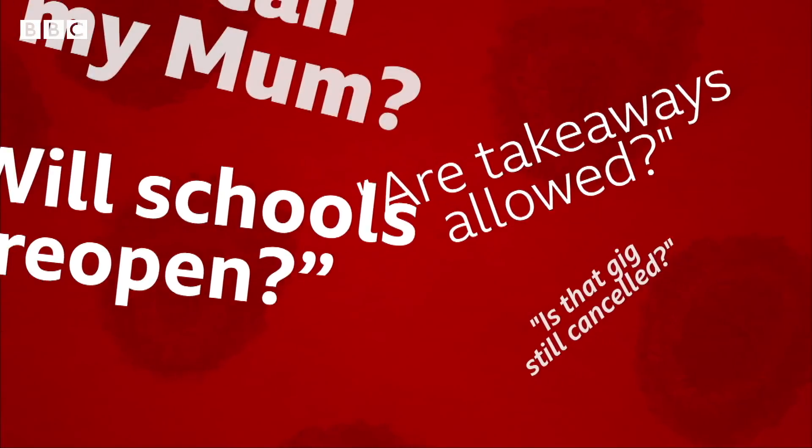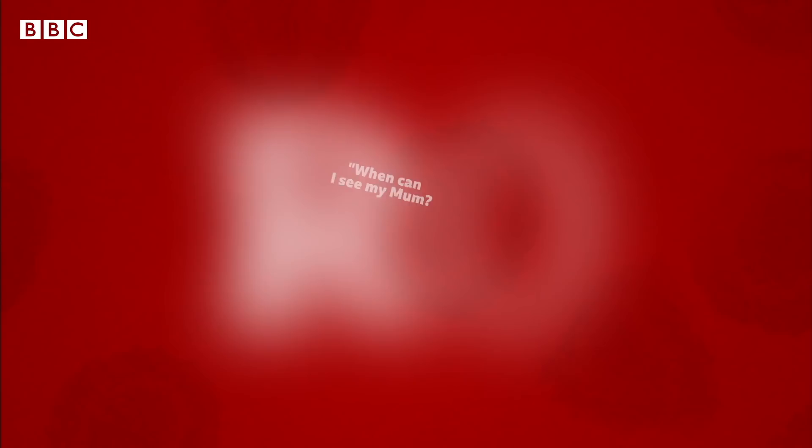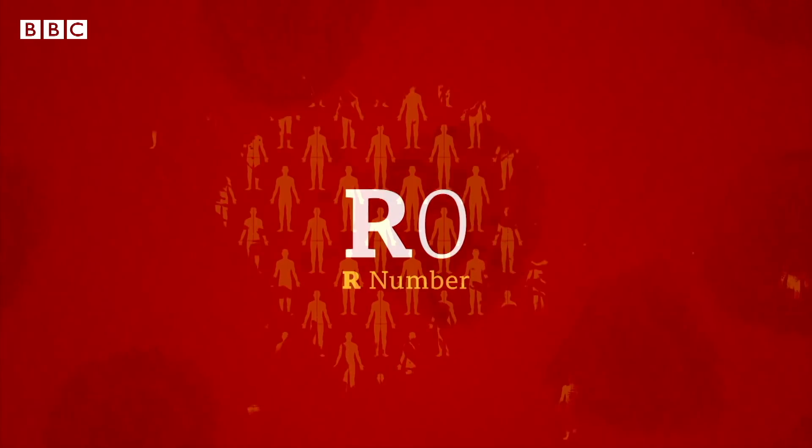When will schools open? Are takeaways allowed? When can I go and see my mum? Our lives right now are pretty much controlled by something called R0, also known as the R number.